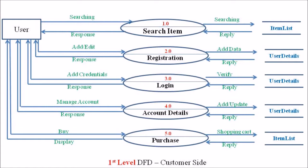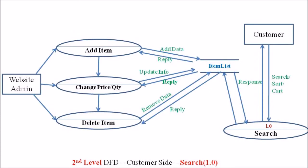We are now expanding the first process, that is the search process — the level 2 DFD for the customer site search process. This level 2 DFD includes a website admin and a customer as entities, represented in rectangular boxes on either side. The website admin deals with three processes: add item, change the price or quantity of an item, and deletion or updation of an item. All these processes reflect changes in the data store called item list.